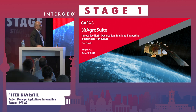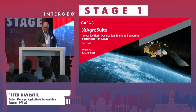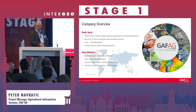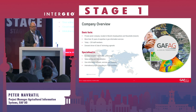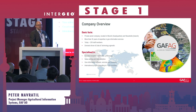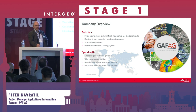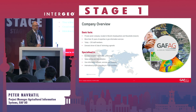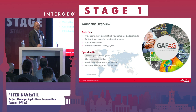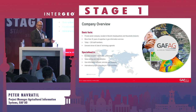Earth observation plays an important role in agriculture. GobAG is one of the really long-term players in the earth observation field in Germany and in Europe. We were founded already in 1985, so we are on the market more than 35 years now. We are in total more than 200 staff covering all kinds of different themes, and agriculture is one of them.